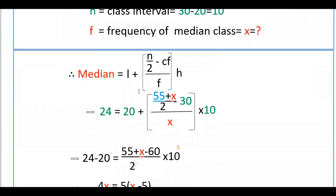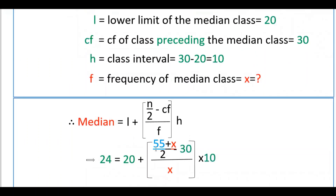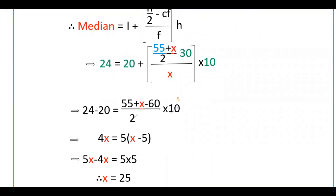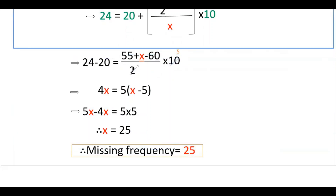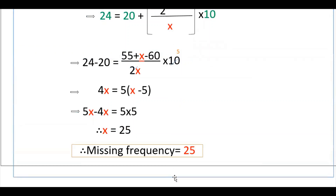We know the median formula: Median = l + (n/2 − cf) / f × h. The median is given as 24, l is 20, n is 55 plus x, cf is 30, f is x, and h is 10. So substituting: 24 = 20 + ((55 + x)/2 − 30) / x × 10.